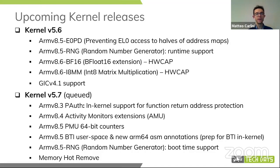From the 8.6 architecture we have, as I said, exposure to user space of BFloat16 and INT8 matrix multiplication. The kernel doesn't make specific use of these features — it's just an exposure to user space. 5.6 will also include support for the ARM system IP, the new GIC interrupt controller interface 4.1.